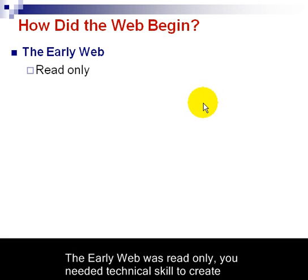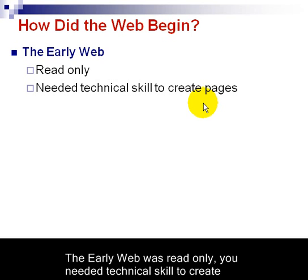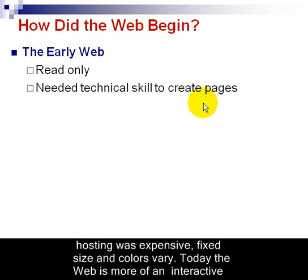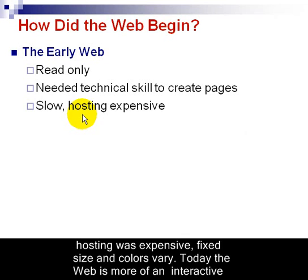Let's take a look at the early web. The early web was pretty much read-only. We could access a web page and read the information, we could print it, but there was no interaction other than possibly sending a form. You needed technical skills to create a web page, and only professional people were able to master the technology needed. The average person was not able to get on the web and do anything. They were slow, and our hardware was nowhere near as sophisticated as it is today. Web hosting was relatively expensive — nothing was free other than the browser.